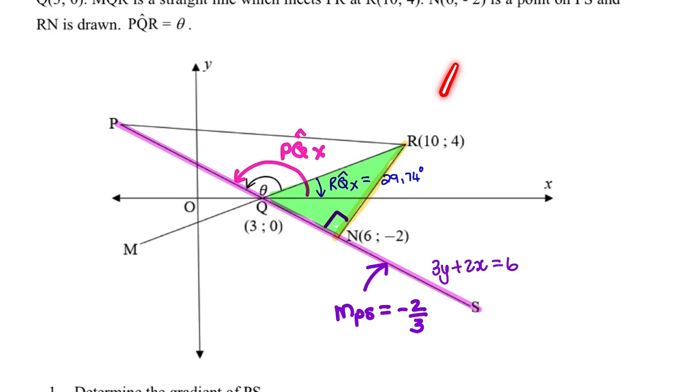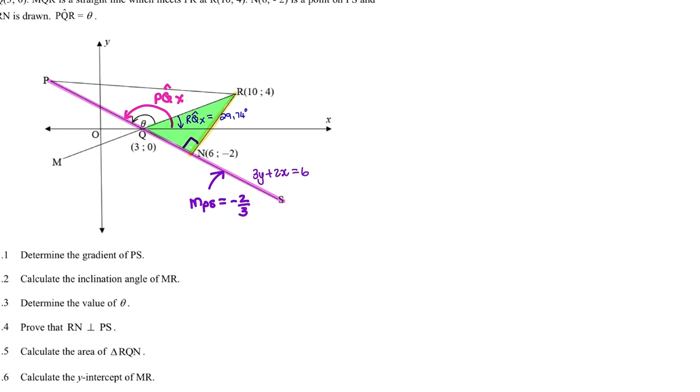And the area of the triangle is half base times height. So in order to answer this question, I need to find the lengths of RN and QN. And I'll use the distance formula for that.